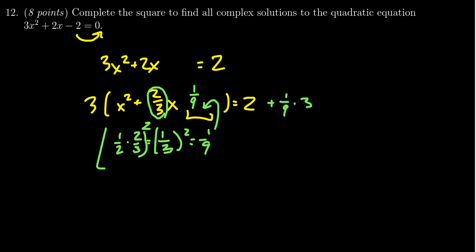Then from there, we get 3 times, well, inside the parentheses, you have x squared plus 2 thirds x plus 1 ninth. I should have put a plus sign right there. This is now a perfect square trinomial. It'll factor, and it'll factor to be x plus 1 third. That is half of the 2 thirds we saw right there, quantity squared.